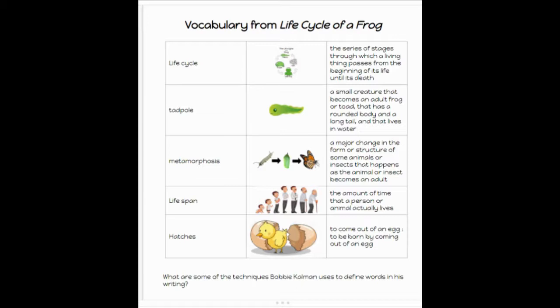Tadpole: a small creature that becomes an adult frog or toad, that has a round body and a long tail and that lives in the water. Metamorphosis: a major change in the form or structure of some animals or insects that happens as the animal or insect becomes an adult.